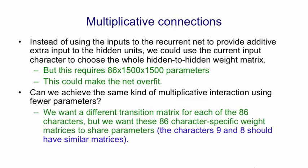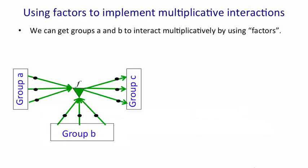So we want to have a different transition matrix for each of those 86 characters, but we want those 86 character-specific weight matrices to share parameters. And that's a reasonable thing to do because we know that characters 8 and 9 should have very similar transition matrices.